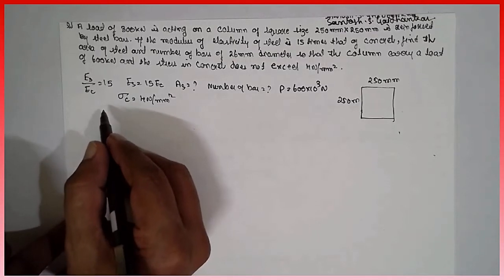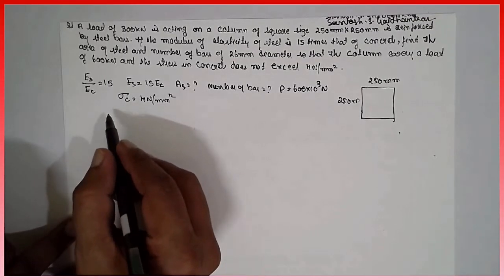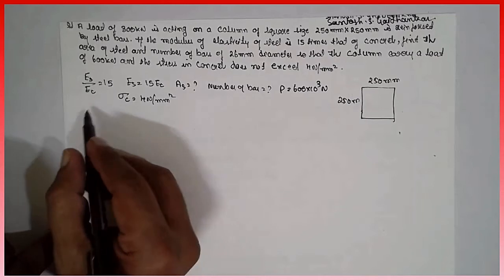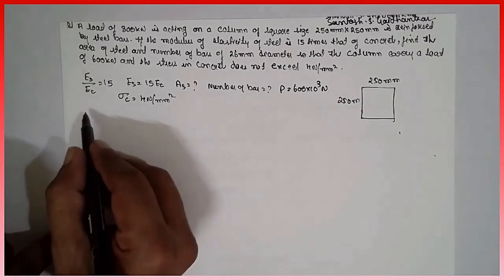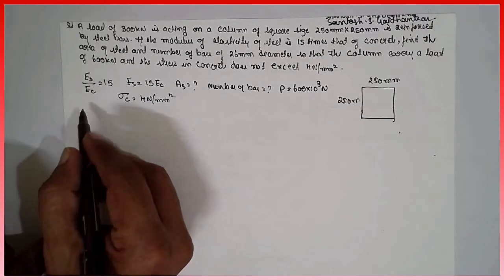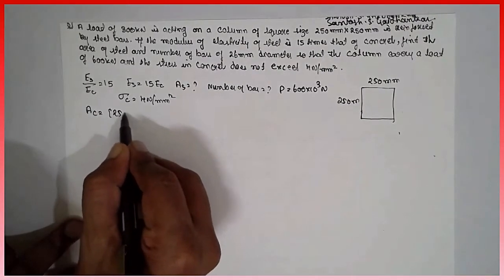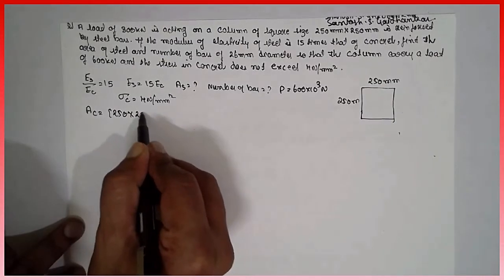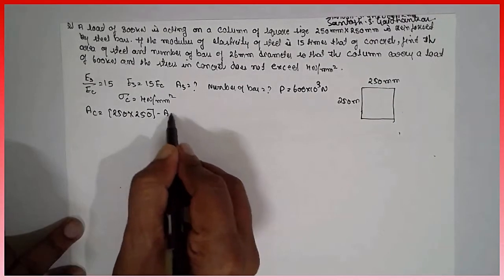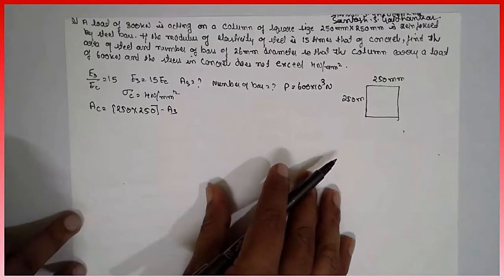Now, area of the concrete will be what? Area of the concrete will be 250 into 250 minus As. As is unknown here.